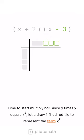Time to start multiplying. Since X times X equals X squared, let's draw one filled red tile to represent the term X squared.